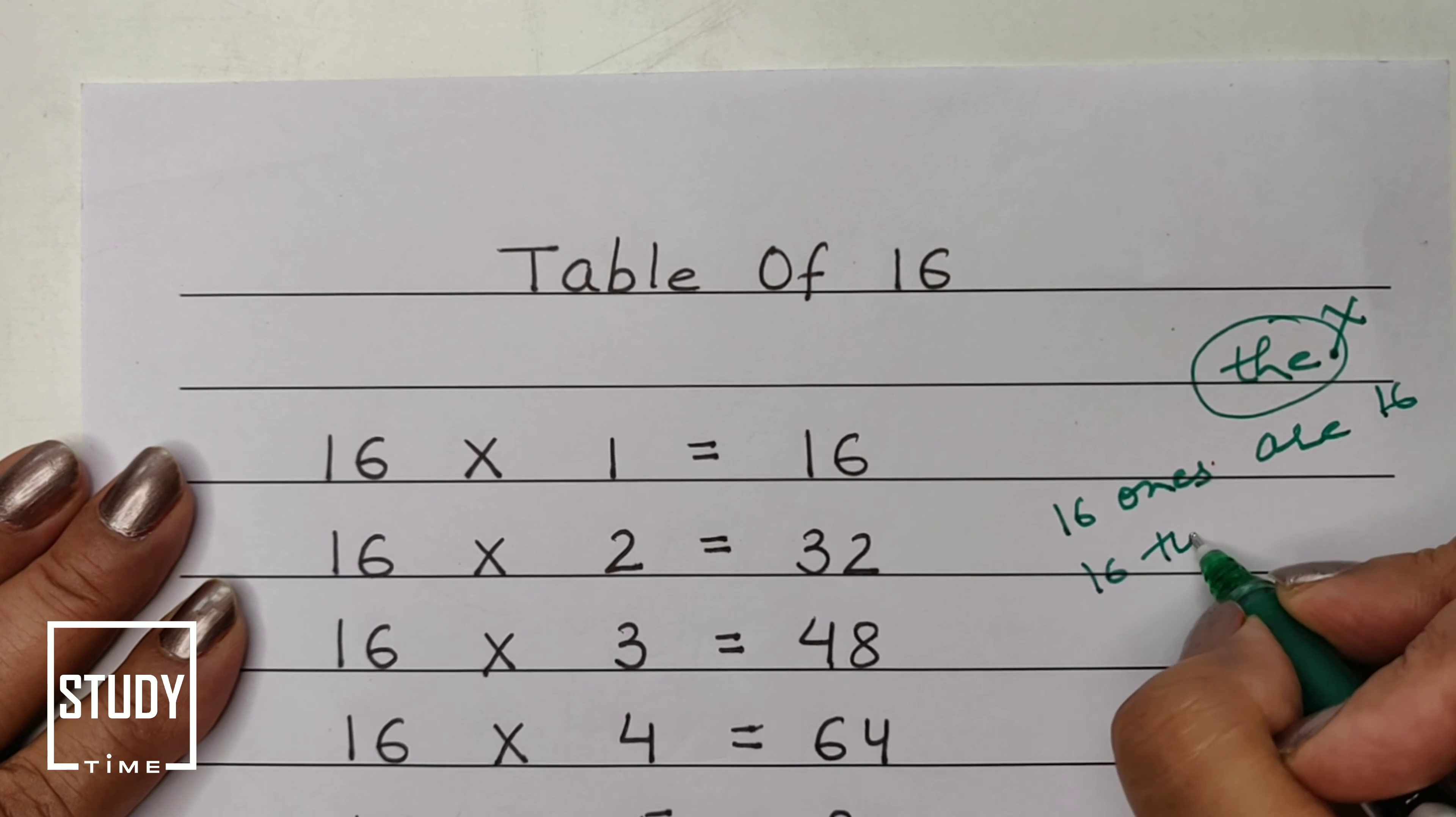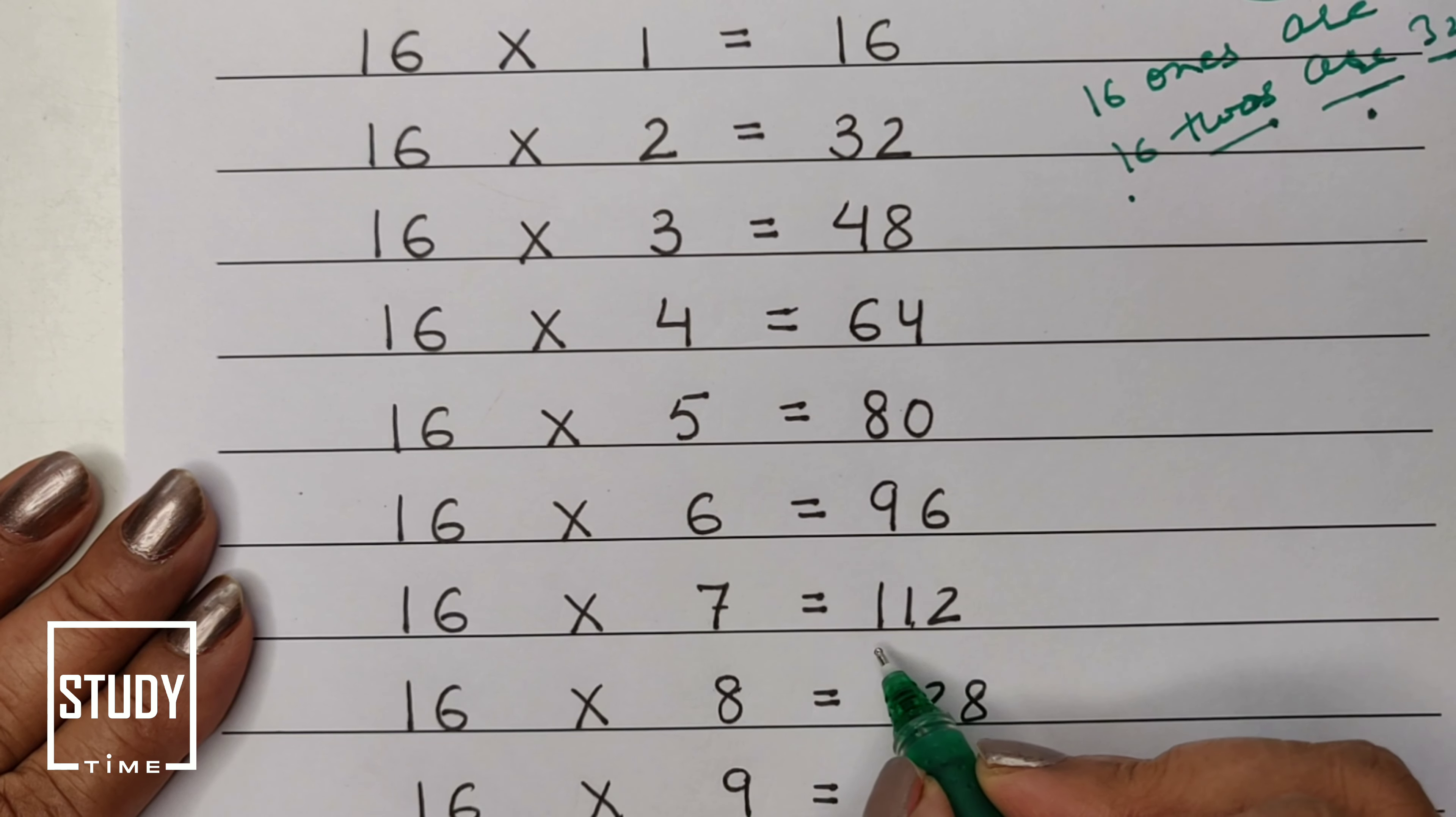But I am telling you don't do this wrong. Let's start with 16 table: 16 ones are 16, 16 twos are 32, 16 threes are 48, 16 fours are 64, 16 fives are 80, 16 sixes are 96, 16 sevens are 112.